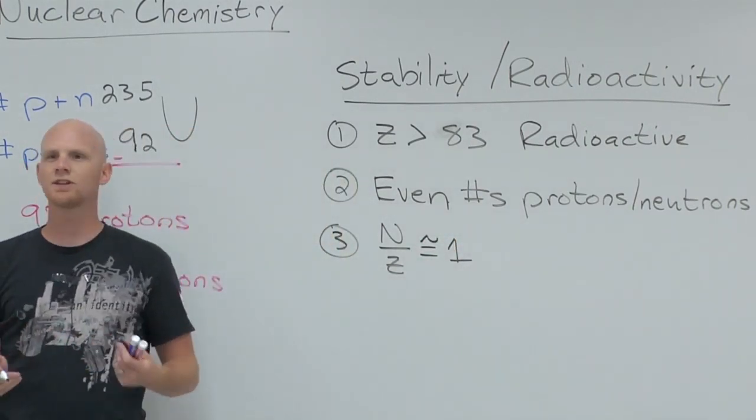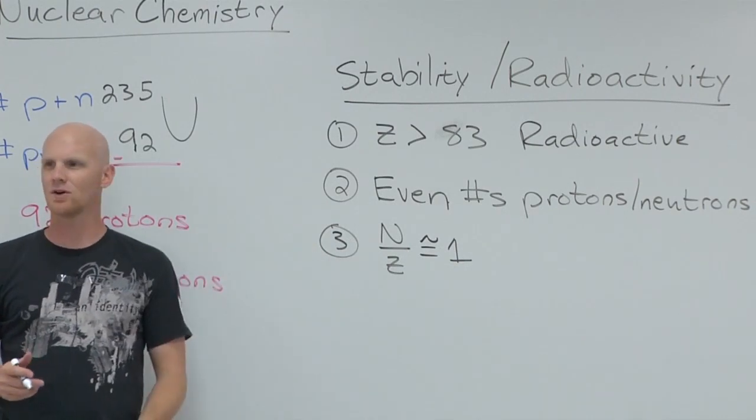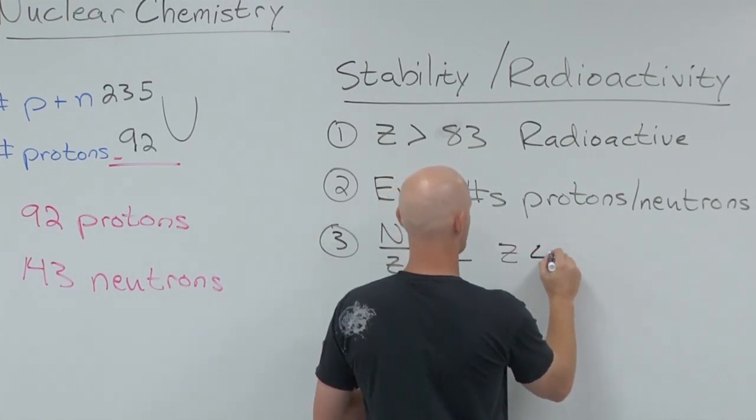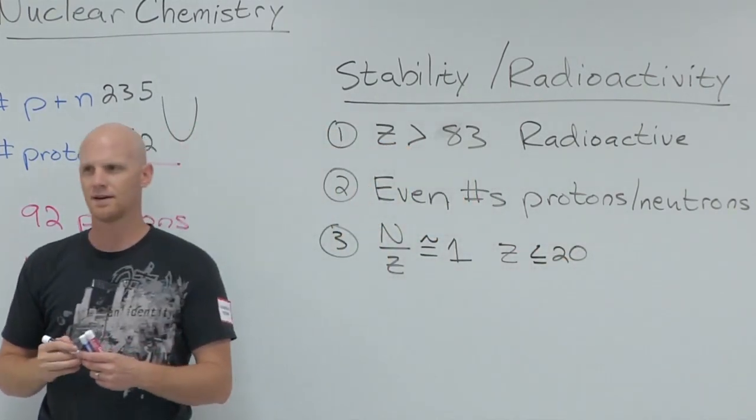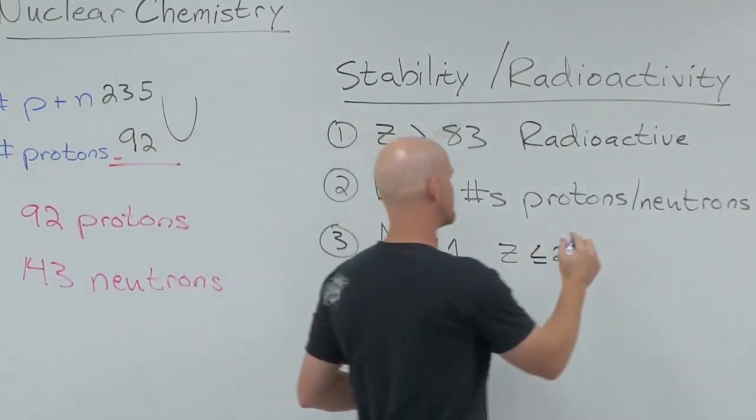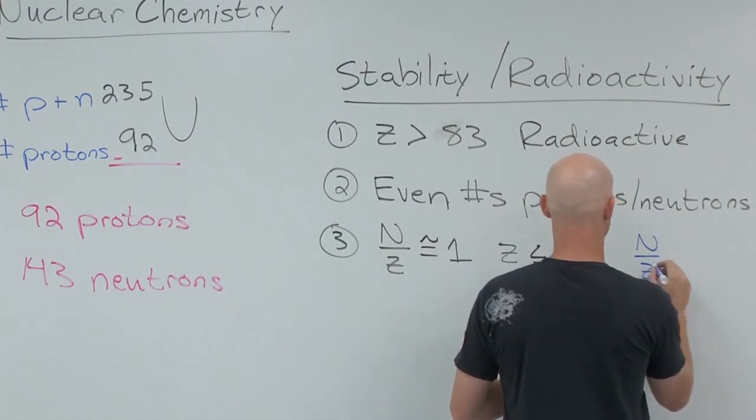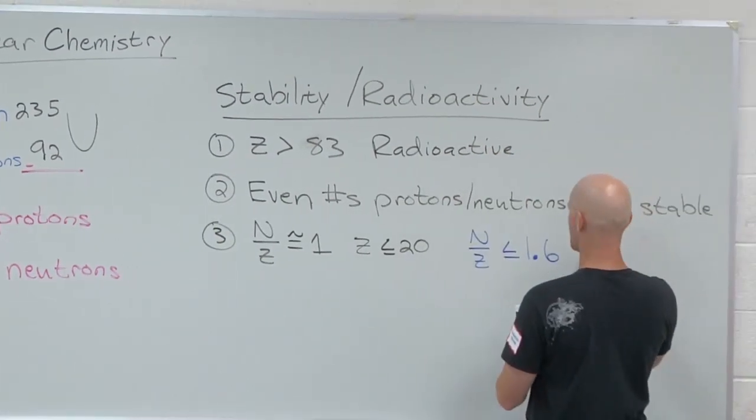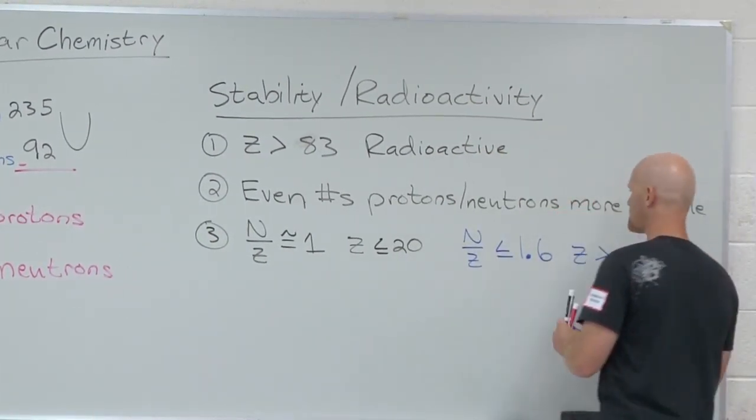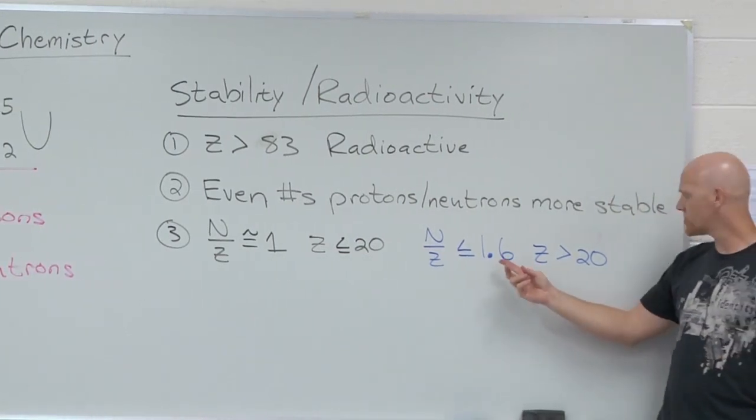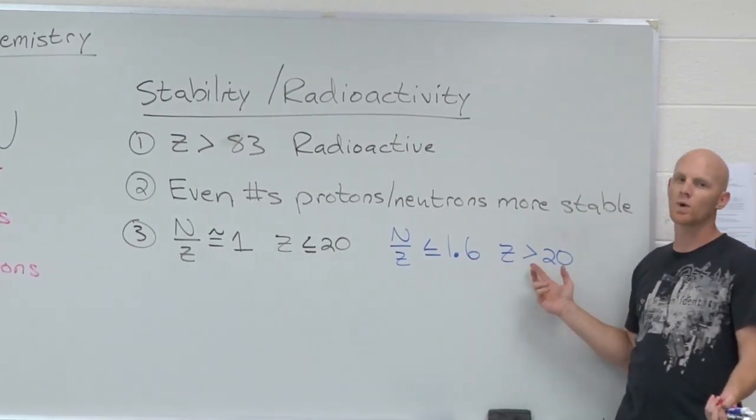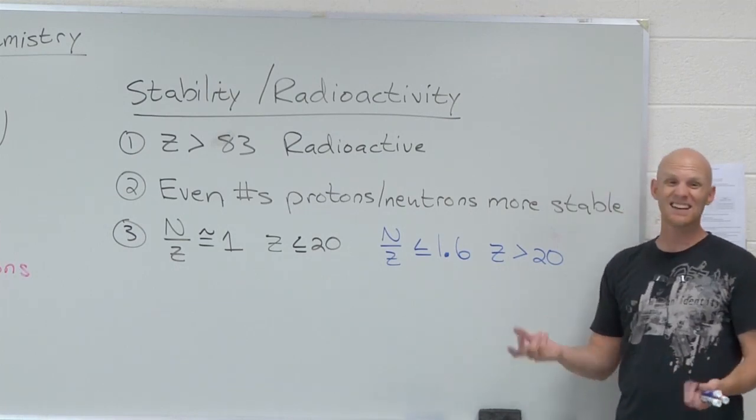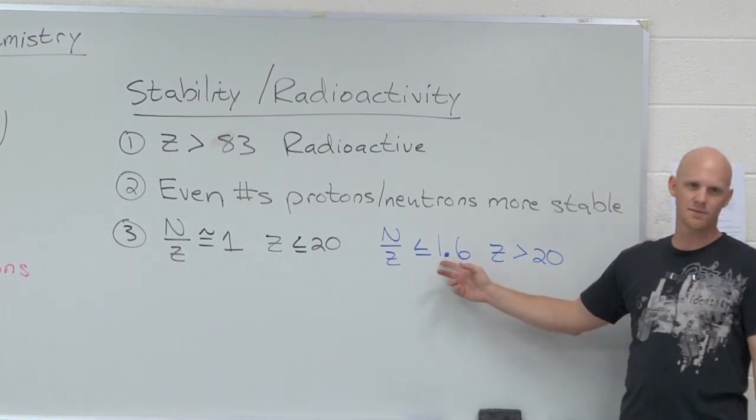And it turns out it's best if that N over Z ratio is really close to one. For every proton, you want to have exactly a neutron to kind of balance that out. So and technically, this is only good up to atomic number 20, up to atomic number 20. Once you get over atomic number 20, so that ratio starts to grow a little bit. So as you get higher and higher than atomic number 20, like if you go to atomic number 21, that ratio probably wants to be about 1.1. If you go to atomic number 30, probably like 1.2. But if you get to atomic number like 90, that's when it's going to start approaching a maximum of 1.6.